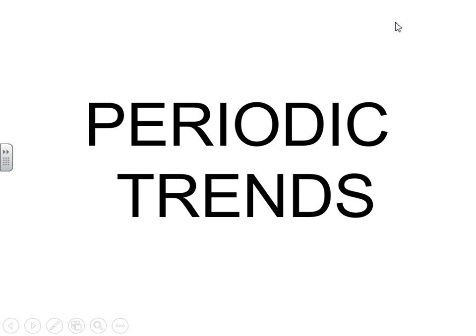This is unit 3, video 8. In this video, we will talk about trends on the periodic table. Think of trends as patterns on the periodic table. The periodic table is arranged in a way to show you patterns among the elements.